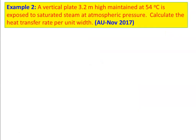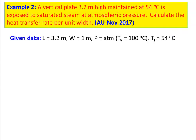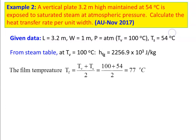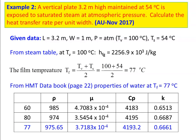Example number 2, from question paper November 2017: A vertical plate 3.2 meter high maintained at 54 degree Celsius is exposed to saturated steam at atmospheric pressure. Calculate the heat transfer rate per unit width. Given data: L = 3.2 m, W = 1 m, atmospheric pressure, so vapor temperature Tv = 100°C, surface temperature Ts = 54°C. From the steam table at 100°C, HFG = 2256.9 × 10³ J/kg. The film temperature is (100 + 54) / 2 = 77°C. Properties from the data book are available at 60 and 80°C, so we interpolate for 77°C.